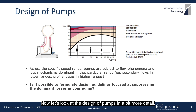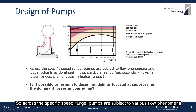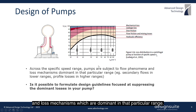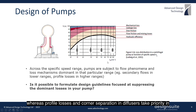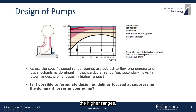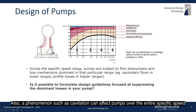Let's look at the design of pumps in a bit more detail. Across the specific speed range, pumps are subject to various flow phenomena and loss mechanisms which are dominant in that particular range. As you can see in this specific speed chart, leakage and secondary flow effects are more dominant in the lower ranges, whereas profile losses and corner separation in diffusers will take priority in the higher ranges.